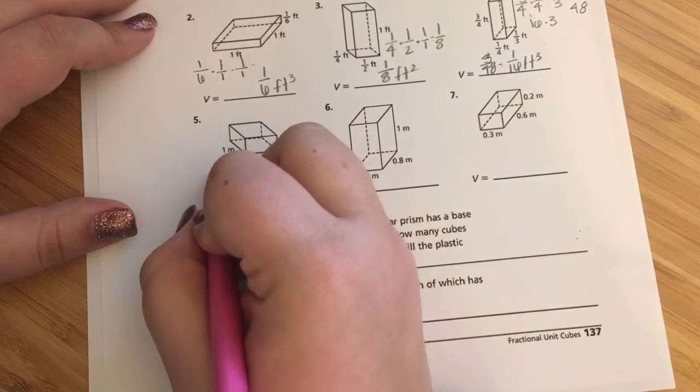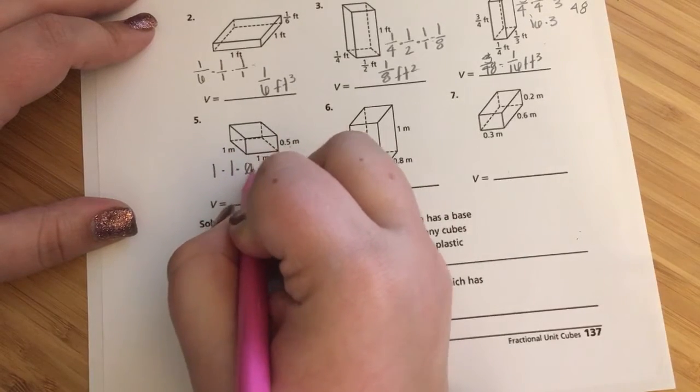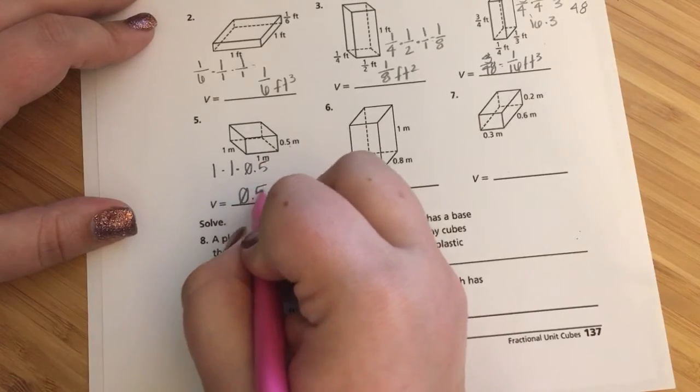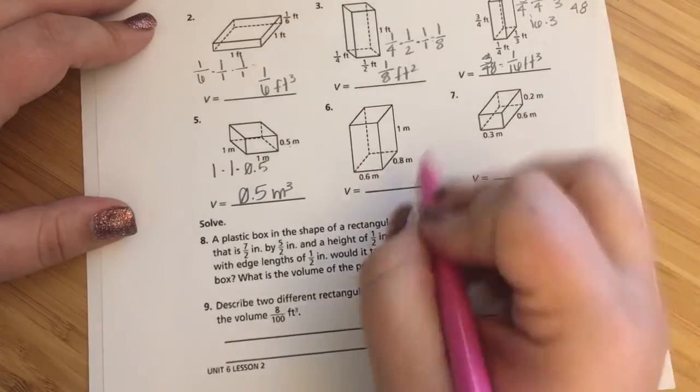1 by 1 by 0.5, that is 0.5 meters cubed. Because that decimal, which would be equal to half, is still multiplied by 1.